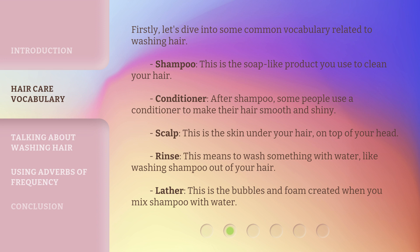Scalp — this is the skin under your hair, on top of your head. Rinse — this means to wash something with water, like washing shampoo out of your hair. Lather — this is the bubbles and foam created when you mix shampoo with water.